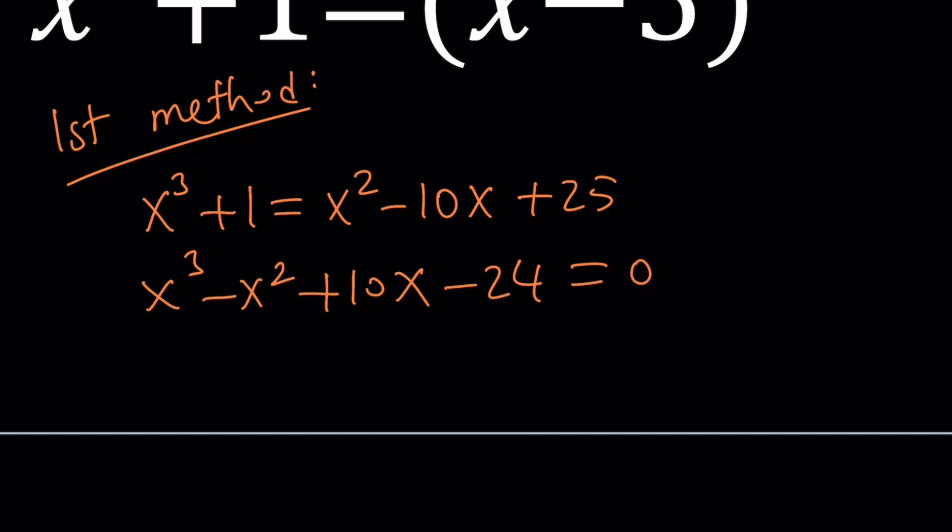But you can definitely use what is called rational root theorem. The rational root theorem says if there's any rational roots, then they have to divide the constant term because this is a monic polynomial, which means the leading coefficient is 1. If the leading coefficient isn't 1,